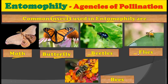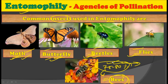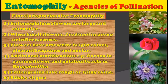The insects commonly used in entomophily are moths, butterflies, beetles, flies, and bees. Remember that about 75 to 80 percent of insect pollination occurs with the help of bees, and the rest contribute 10 to 20 percent. So while writing about entomophily you should mention moths, butterflies, beetles, and flies, but you must specially mention bees, since they are responsible for most insect pollination.